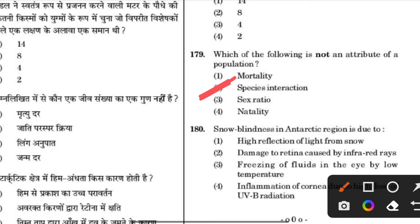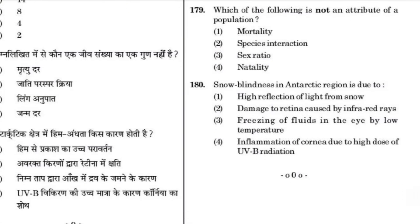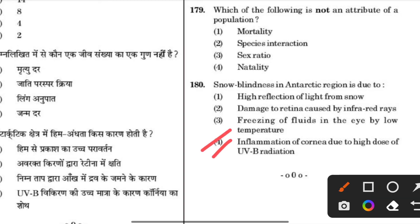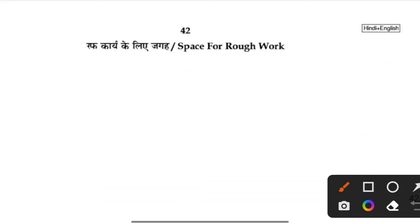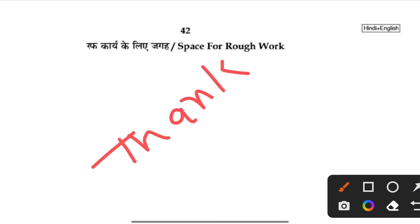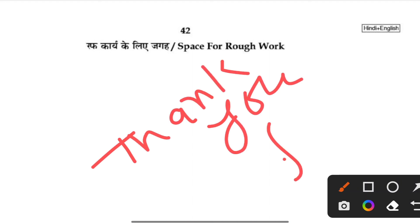Which of the following is not an attribute of a population — that is, species interaction. Snow blindness in the Antarctic region is due to inflammation of the cornea caused by high UV radiation — the answer is 4. Thank you for watching.